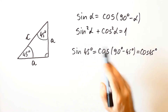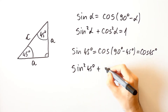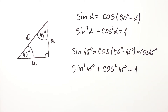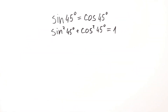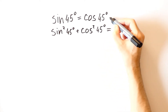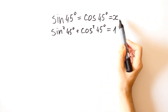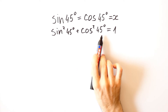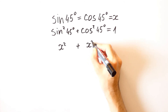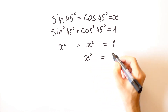And from the second identity, we get that sine squared of 45 degrees plus cosine squared of 45 degrees is equal to 1. So, since the sine of 45 degrees equals the cosine of 45 degrees, we can call that x. Substituting x for both, we get x squared plus x squared equals 1, which means that x squared is equal to 1 over 2.